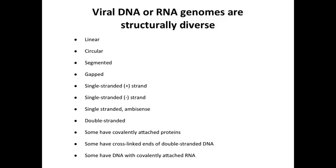In addition to these seven genome types, I want to show the different structural configurations they can occur in. They can be linear or circular. They can occur in segments — some viral genomes are in one molecule, and some come in pieces, somewhat like our chromosomes. There are also gapped genomes as with hepatitis B, single strands of plus and minus polarity, and an ambisense genome with components of both plus and minus strands. Some genomes have proteins covalently attached, and some have cross-linked ends forming a small circle.